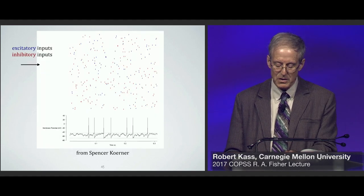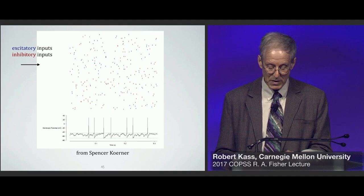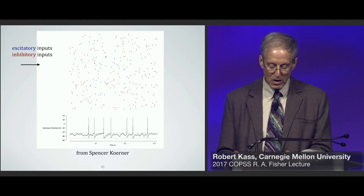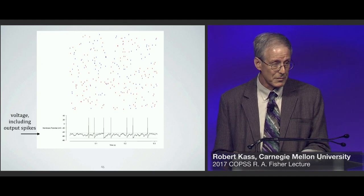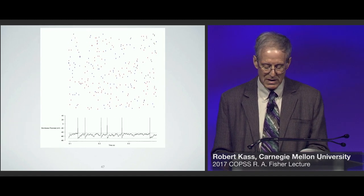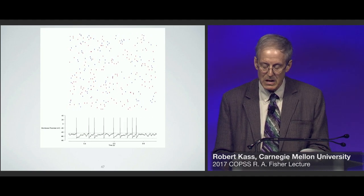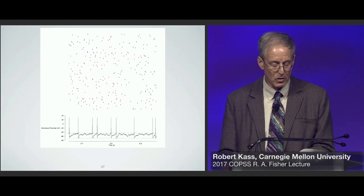Here's a simulation made by a graduate student in statistics and computational neuroscience at Carnegie Mellon, Spencer Kerner, showing above some of the excitatory and inhibitory inputs in blue and red as time evolves along the x-axis, and below the resulting voltage together with the output spikes, which roughly resemble real data. I'm playing the simulation about ten times more slowly than it would occur for a real neuron. This random walk summation of inputs remains one of the standard conceptions of neural behavior.